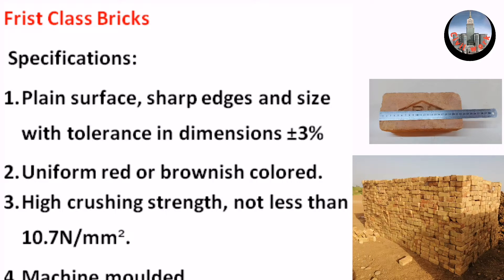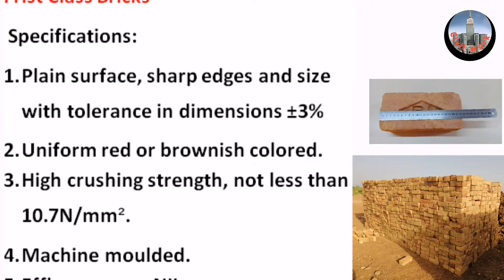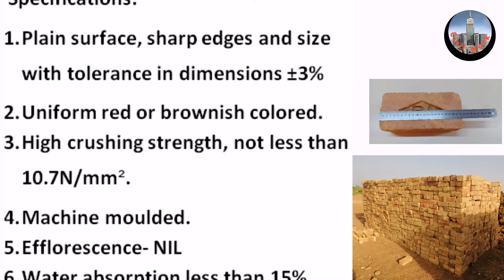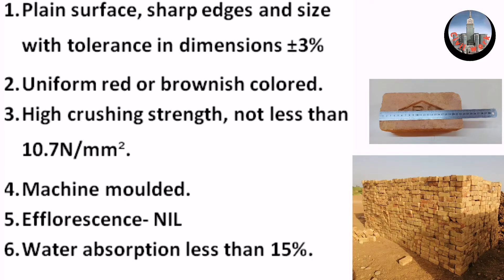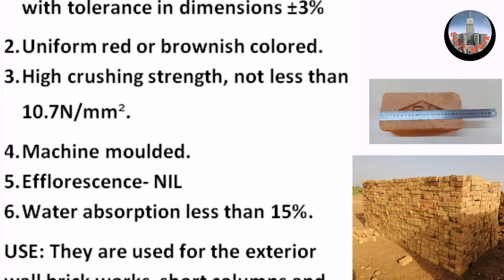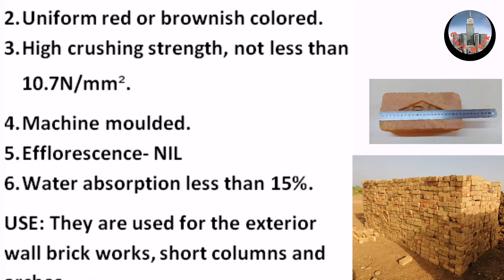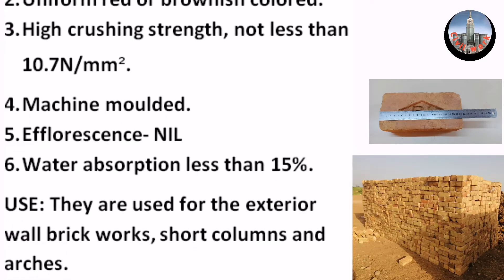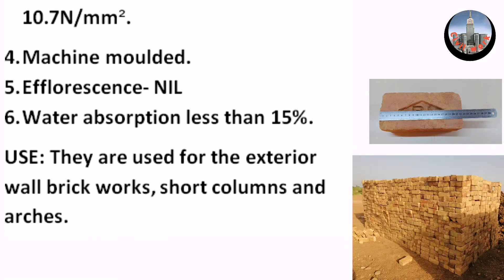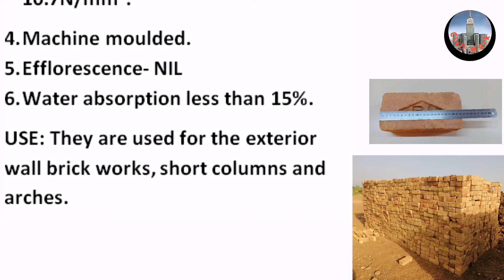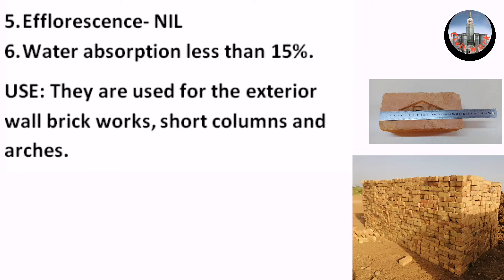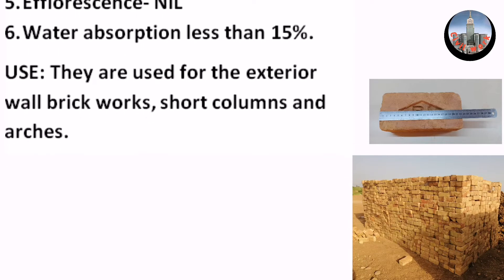First Class Bricks Specifications: Plain surface, sharp edges and size with tolerance in dimensions ±3%. Uniform red or brownish colored. High crushing strength, not less than 10.7 N/m². Machine molded. Efflorescence nil. Water absorption less than 15%. Use: They are used for exterior wall brick works, short columns and arches.